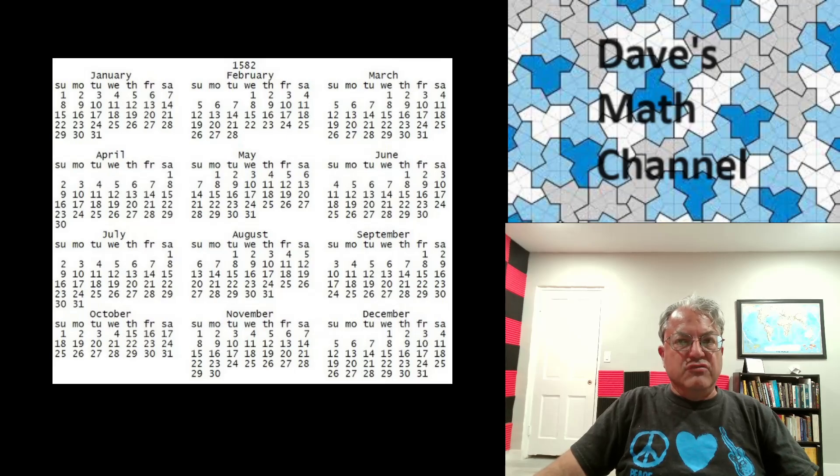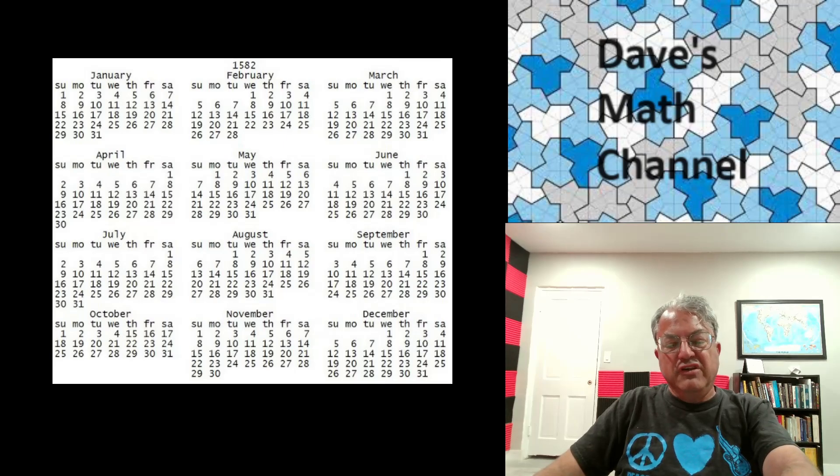So for instance, the year 2000 was a leap year because 2000 is divisible by 400, but 2100 will not be a leap year because it is a turn of the century, but it's not divisible by 400. So anyway, that pretty much fixed the calendar. Now our calendar is very accurate. I think there's something like 25 seconds a year. It's for all practical purposes, it's as accurate as we could want it to be.